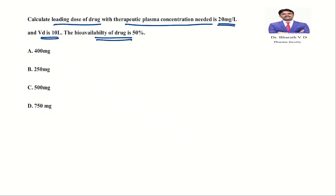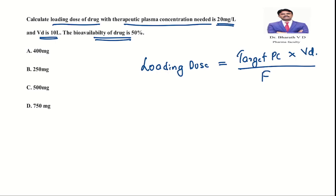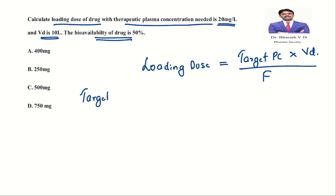This is very important for NEET PG. The formula for loading dose: loading dose depends on volume of distribution. It is given by: target plasma concentration × volume of distribution, divided by F (bioavailability), when giving by non-IV routes.